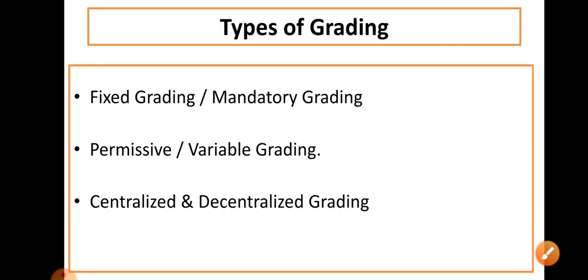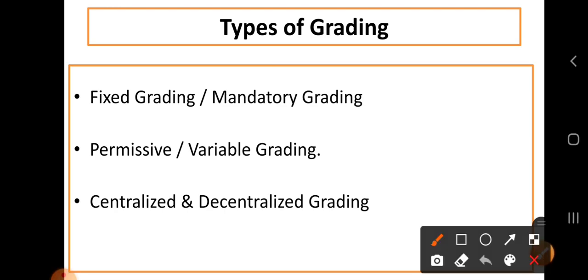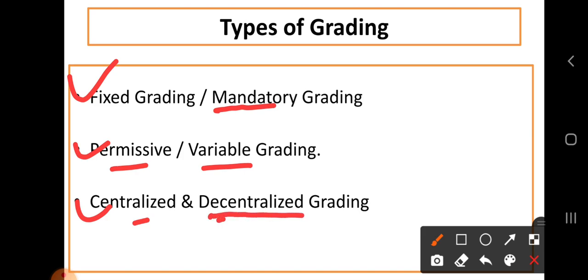What are the different types of grading? Majorly we have fixed grading or mandatory grading, and permissive or variable grading, then centralized and decentralized grading. So majorly we have four types: fixed grading, variable grading, centralized grading, and decentralized grading.